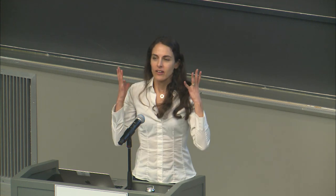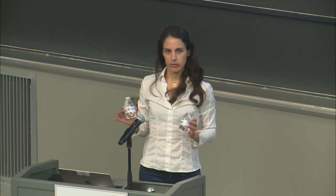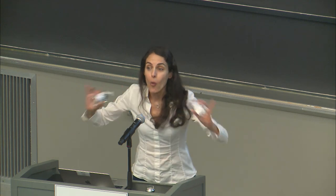Let me show you that zero knowledge proofs are actually possible. Here are two bottles of water. I want to prove to you that they're different — that they're not the same. I know secretly that on one of them there's a mark or some distinguishing feature, but I won't tell you. I know they're different, and I want to convince you they're different without you learning any information about why they're different.